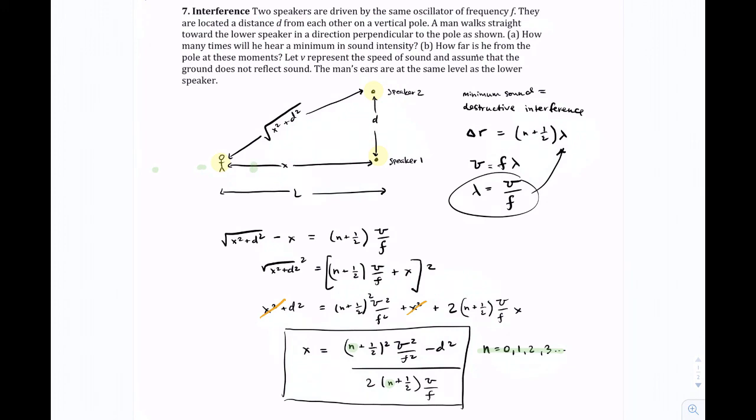And what you'll notice is these are going to start getting closer together as you get closer in. But there should be a discrete number of them. And actually, a way more robust problem with way fewer solutions would be to start at where this guy is here and walk this way because you'd probably get less stuff.